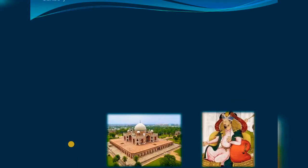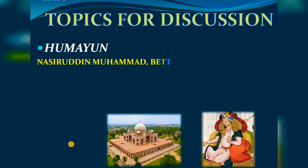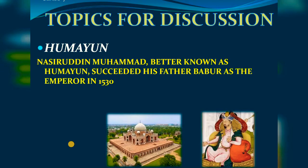Moving on to the next slide, the topic we will discuss today is Humayun. Humayun was the second Mughal ruler who came after Babur and took over the throne of the Mughal Empire. Nasiruddin Mohammad, better known as Humayun, succeeded his father Babur as emperor in 1530. The meaning of his name, Humayun, was 'fortunate' — meaning lucky.